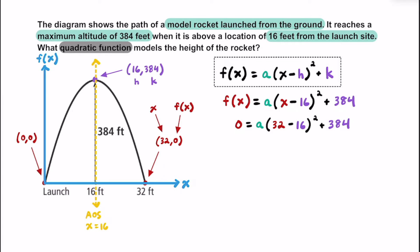Now that we've substituted in x and f(x), the only variable we have left is a, so let's solve for it. First, let's follow what's inside the parentheses. Squaring this 16, we're going to get 256. So we're going to have zero equals a times 256 — or 256a — and then plus 384.